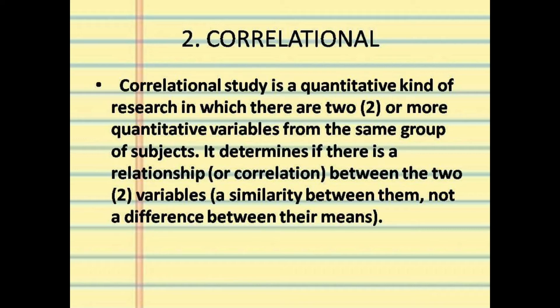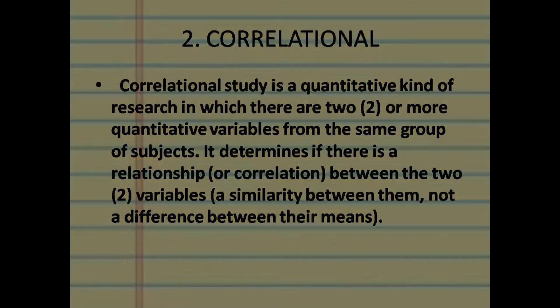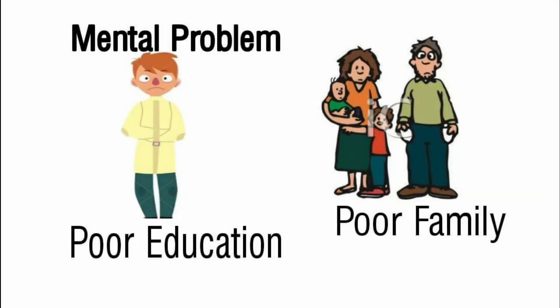Next is correlational. A correlational study is a quantitative kind of research in which there are two or more quantitative variables from the same group or subject. It determines if there is a relationship or correlation between the two variables — a similarity between them, not a difference between their means. Our sample: is there a relation between a patient's mental problem and their poor education and poor family situation? That is what correlational research studies.